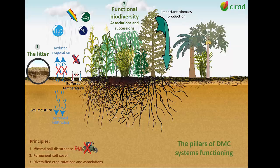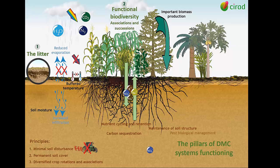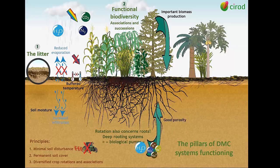Plant diversity also plays a role in ecosystem services, such as carbon sequestration, nutrient cycling and retention, maintenance of soil structure, and pest biological management. Above ground diversity also rhymes with deep and complex rooting systems that act as biological pumps for recycling water and nutrients and improve soil porosity and structure.